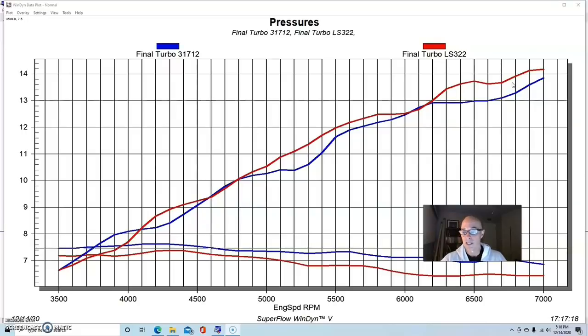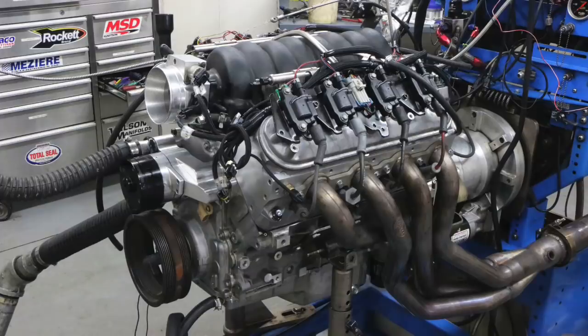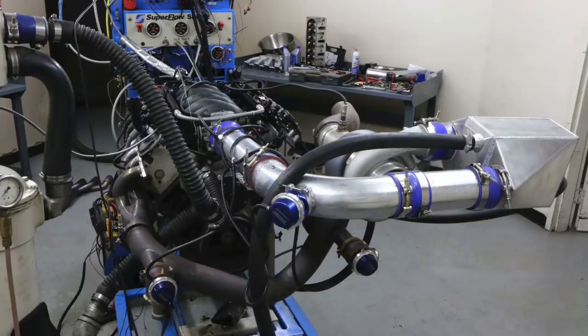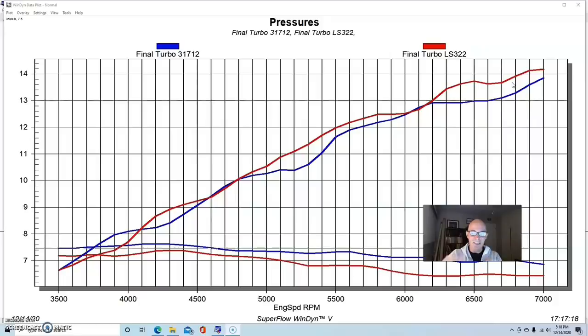So what happens is the LS3, were we to run a consistent boost pressure to both of these, the LS3 head would make even more power. The difference between the LS3 head and 317 head would be even greater that we showed there. It'd be the NA difference times the boost times 1.5, basically in this case, because we had about seven pounds. So if you make more power NA, then you will make more power under boost. That's all kind of logic.